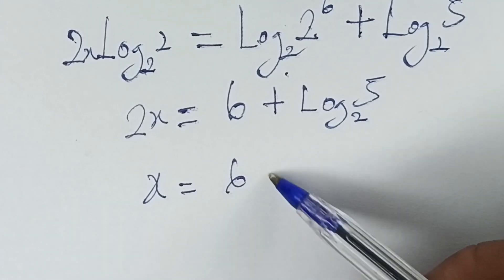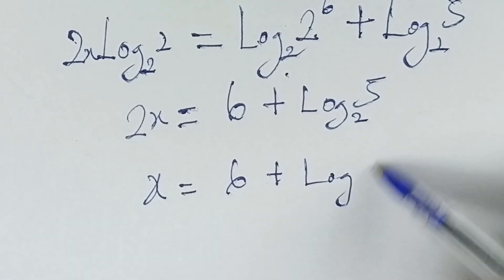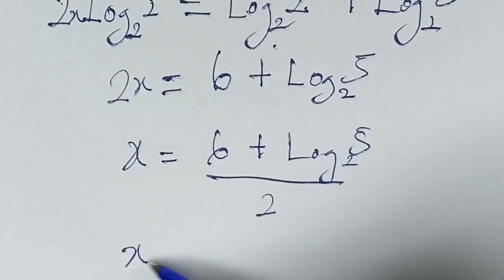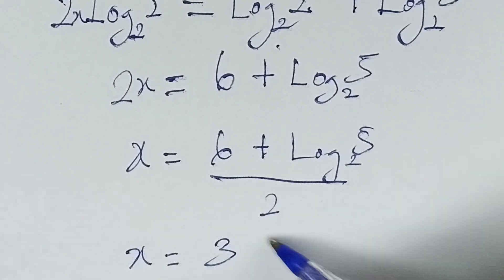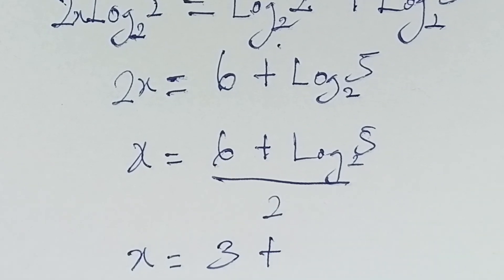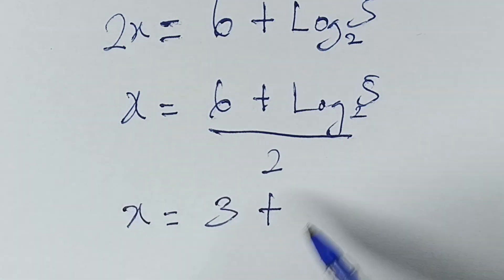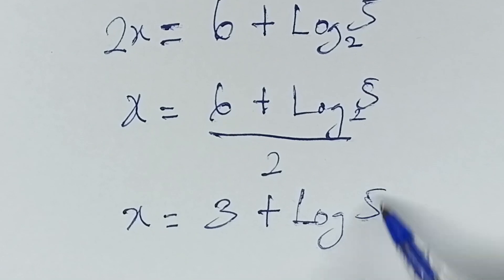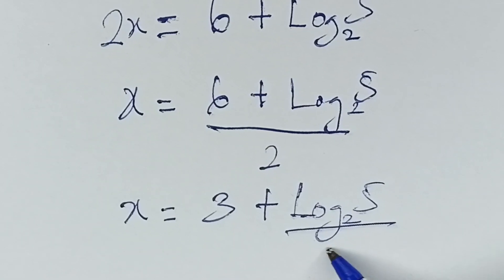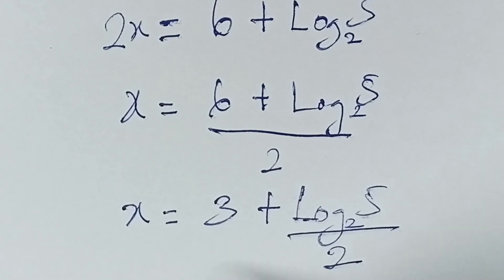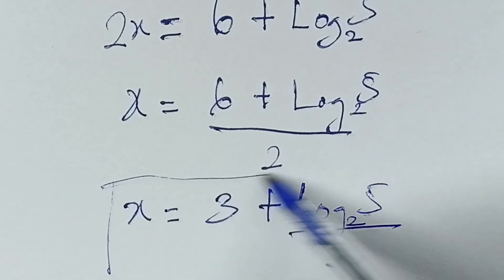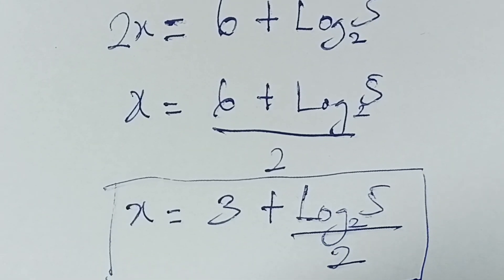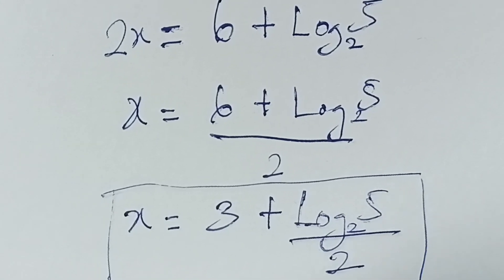So 2x equals 6 plus logarithm base 2 of 5. Finding x, we divide through by 2: x equals 6 over 2 plus logarithm base 2 of 5 all over 2, which gives x equals 3 plus logarithm base 2 of 5 over 2. This is our final answer. Thanks for watching, I'll see you guys in the next video, bye bye.